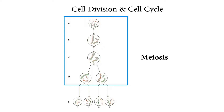During meiosis, the cell gets ready for division in a similar manner. Centromeres move apart, the nuclear membrane disappears, the chromosomes are formed and they split into two, then arrange themselves in the metaphase plate.